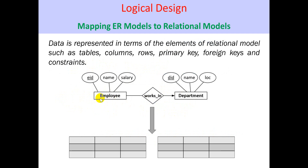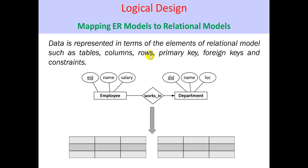That means, if the employee has one entity set and the department has one entity set, each entity instance is represented as a row, and each attribute becomes a column. The attributes of an entity set become the columns of the corresponding relation table.